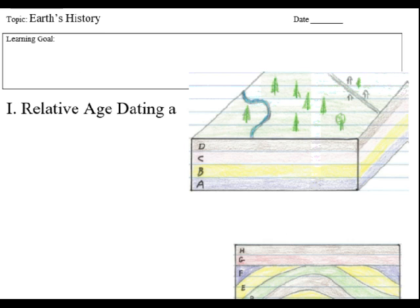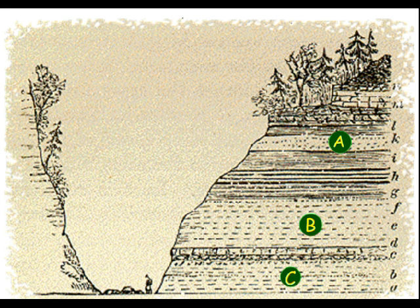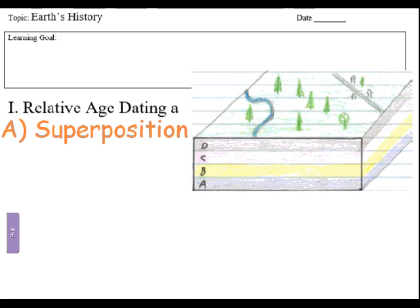If we take a look at our page in our notes — page 61 — we're going to focus on relative age dating. The first section deals with the diagram on the top right. Looking at these rock layers, you were able to figure out that the oldest rock layer, the one deposited first, would be rock layer C. A would be the youngest. That's the first principle: the principle of superposition.